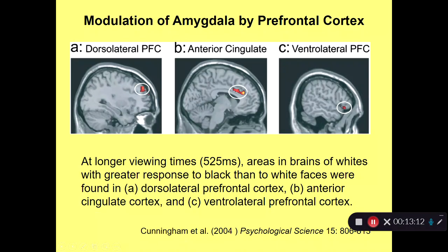Here are more MRI scans at the longer viewing time, showing increased activity in dorsolateral prefrontal cortex, ventrolateral prefrontal cortex, and anterior cingulate cortex. The prefrontal cortex is itself a sub-region of the frontal cortex, with important sub-regions including the dorsolateral and ventromedial. These sub-regions of the prefrontal cortex have distinct functions, though neuroscientists are still trying to figure those out. I often refer to prefrontal cortex more generally, but keep in mind that in many contexts the sub-regions are functionally important.